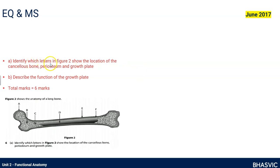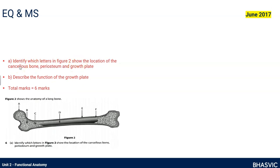The first question asks you to identify which letters in figure two show the location of the cancellous bone, periosteum, and growth plate. It gives you six labelled options and you pick three. The second part asks for the function of the growth plate — this whole question is for six marks: three for identifying the labels, and three for describing the function of the growth plates, the epiphyseal plates.